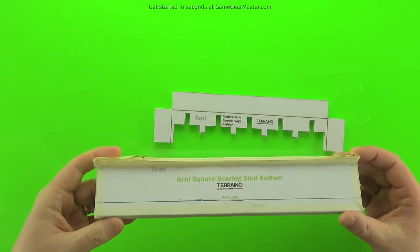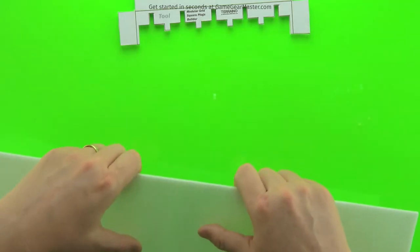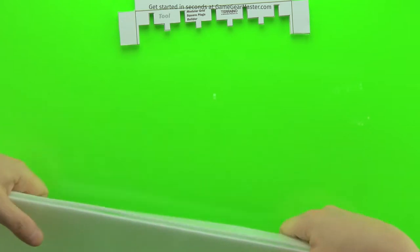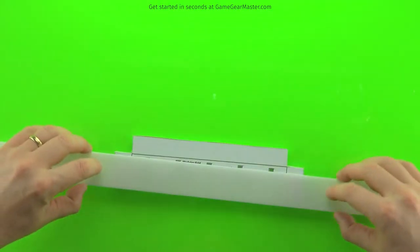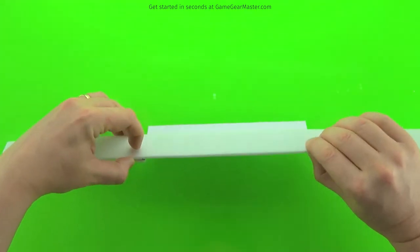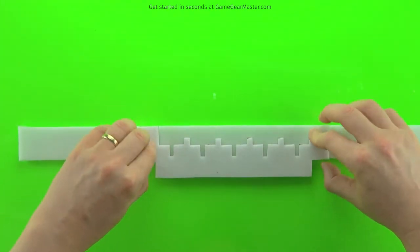Now you're going to use your grid scoring sled to cut a strip of foam board that is a grid square's width. We're going to use that to build the rest of the tool. You're going to lay it on just like this and then tape it down with some masking tape.